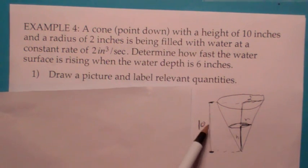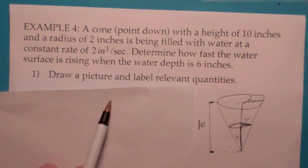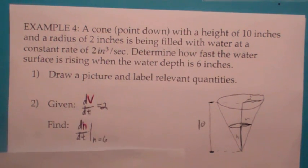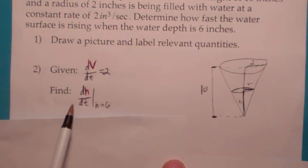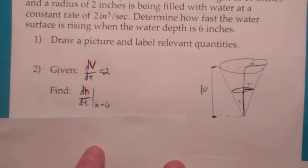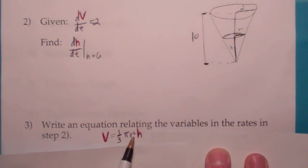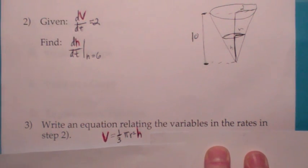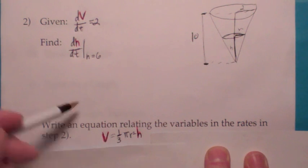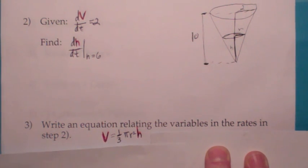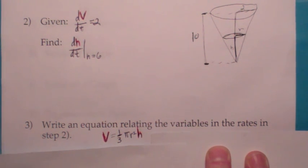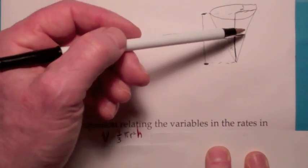They're giving you that dV/dt is 2 and they want you to find dh/dt when h equals 6. The formula for the volume of a cone is V equals (1/3)πr²h. We have a problem — we need an equation relating the variables given, and there's no dr/dt, only dV/dt. So we're going to have to eliminate r from this equation using similar triangles. The big triangle is similar to the small one, so h is to r as 10 is to 2. Cross-multiplying: 10r equals 2h, so r equals h/5.